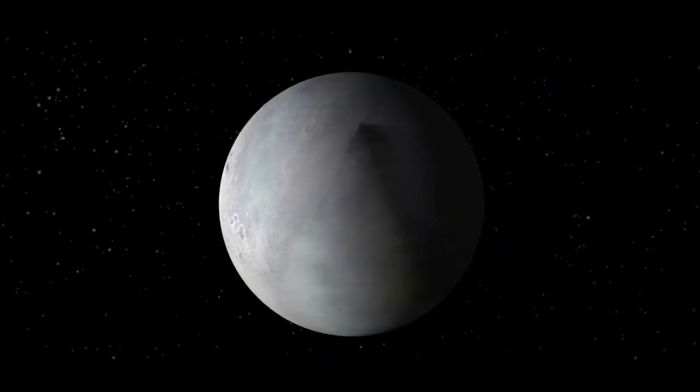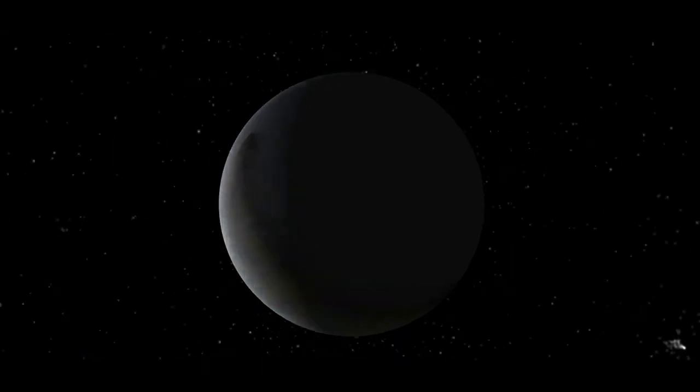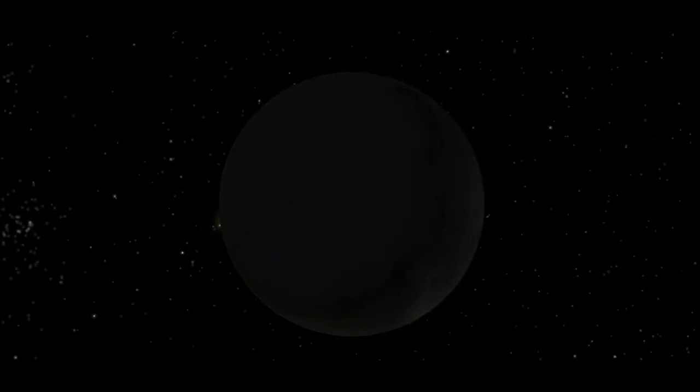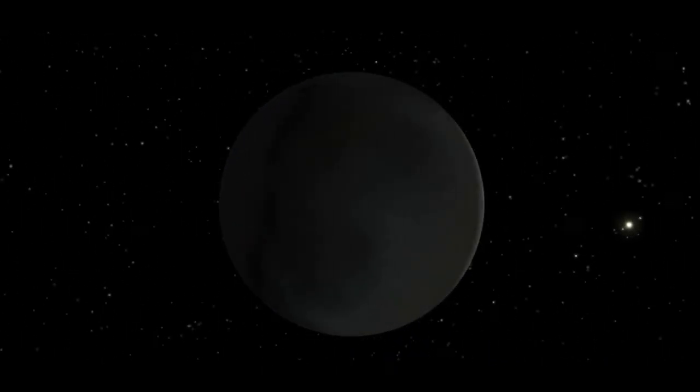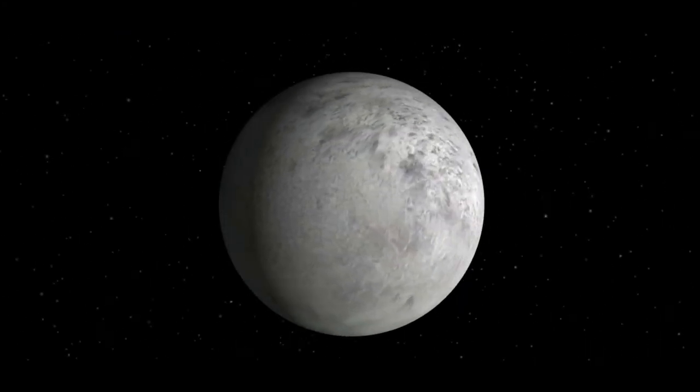Neptune's largest moon Triton orbits the planet in the opposite direction compared with the rest of the moons, suggesting that it may have been captured by Neptune in the distant past.